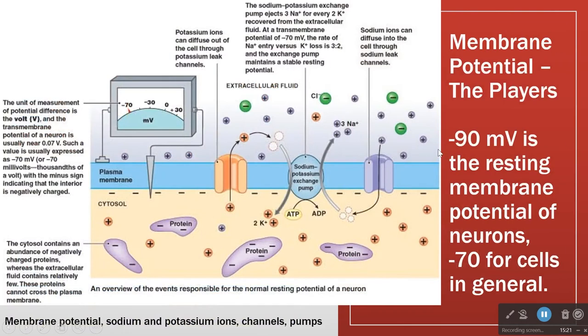So if we put all this together, because in a real cell we have potassium channels, sodium channels, potassium gradients, sodium gradients, and electrical gradients — that's a lot of gradients. Here are our players, and here's our meter to measure our membrane potential.